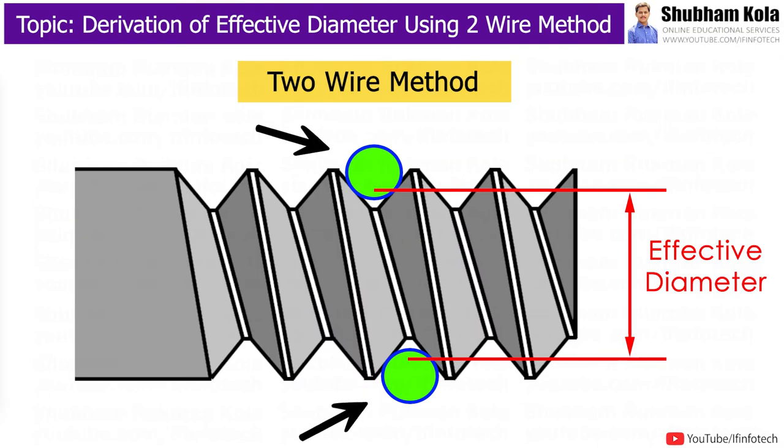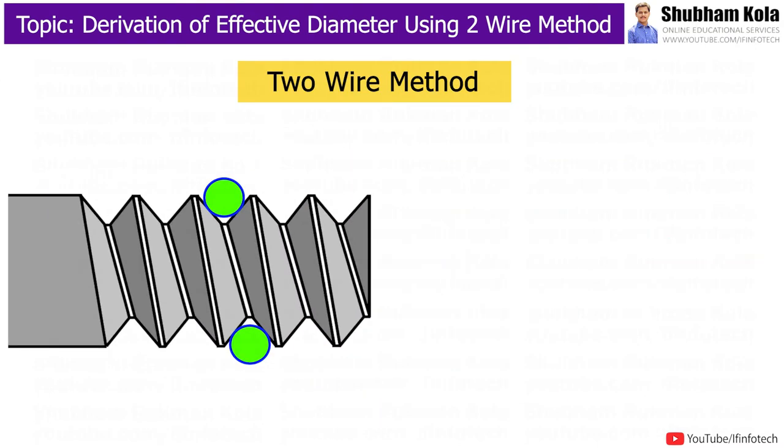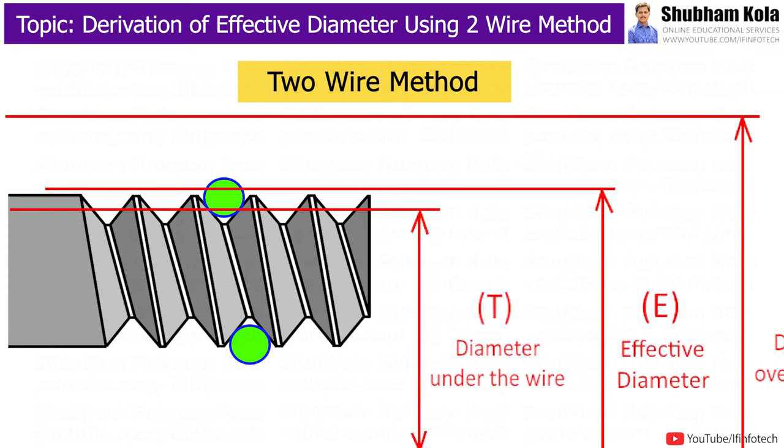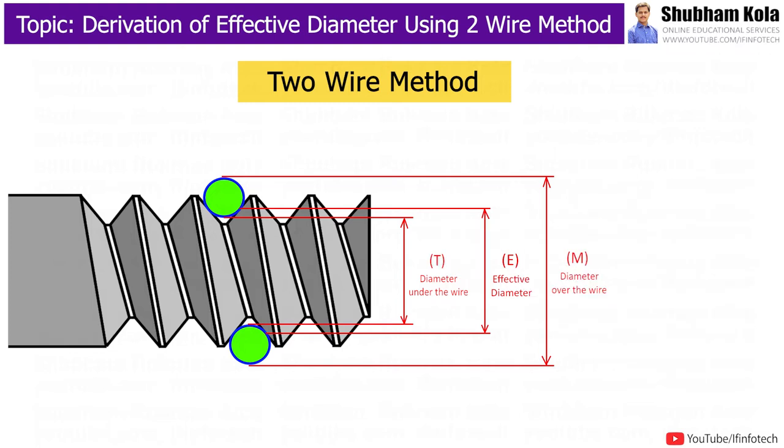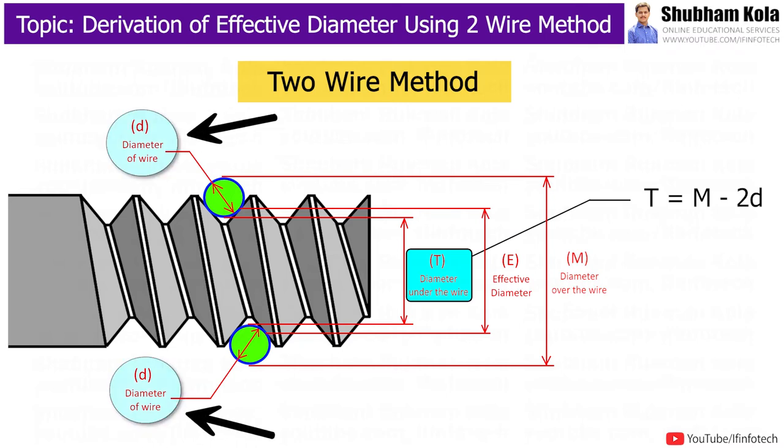In case of two-wire method, to measure parameters, we are going to use two wires of same diameter. When we take measurement over the wire on floating carriage micrometer, I will consider capital M as diameter over the wire. If we subtract these two wires diameter, that is two times diameter from this diameter, then that diameter is the diameter under the wire considered as capital T.